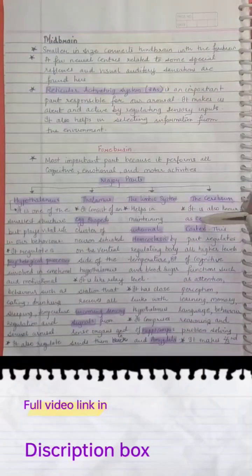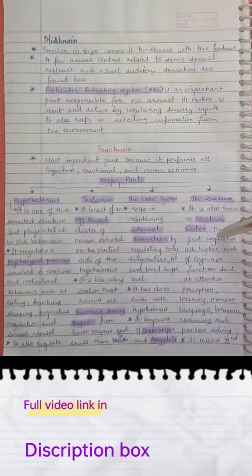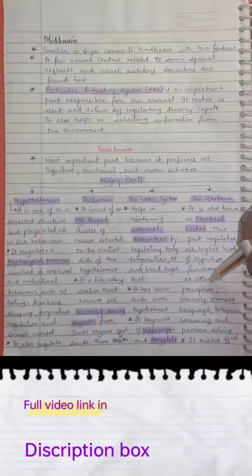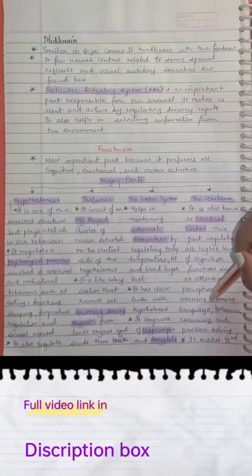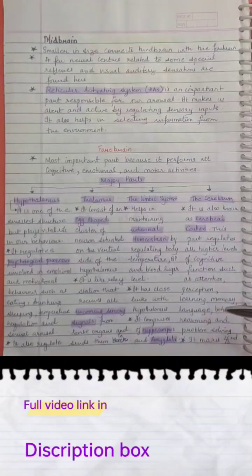The cerebrum is also known as the cerebral cortex. This part regulates all higher levels of cognitive functions such as attention, perception, learning, memory, language, behavior, reasoning, and problem-solving.